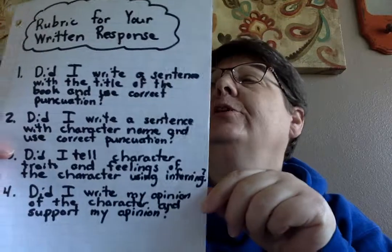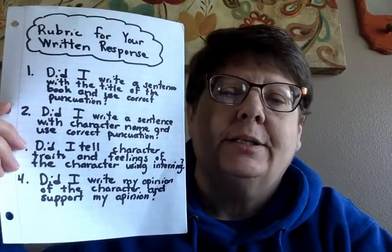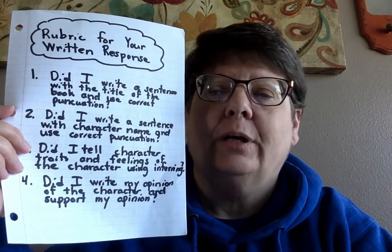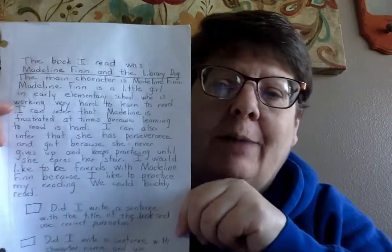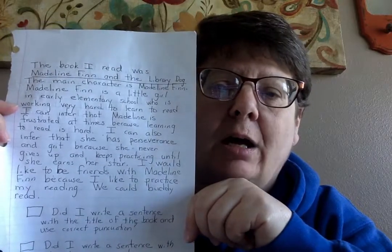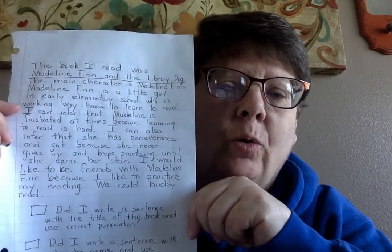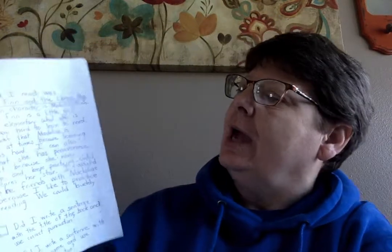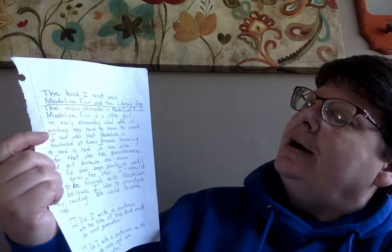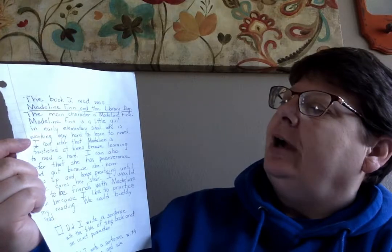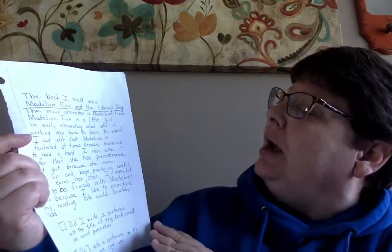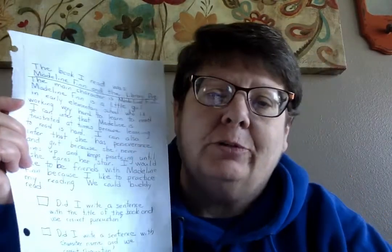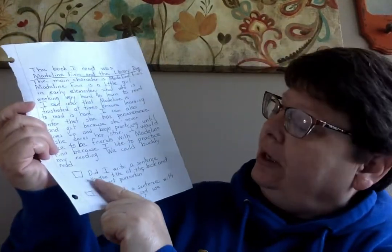I broke it down into some parts. The first one is: did I write a sentence with the title of the book and the correct punctuation? Here is my final copy of the whole response — I wanted you to see how yours should look when you get all the way done. I wrote, 'The book I read was Madeline Finn and the Library Dog.' I remembered to put my period at the end of the sentence and to underline the title of the book. So I can put a checkmark there because I completed that part.